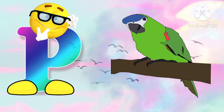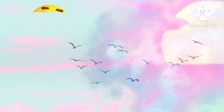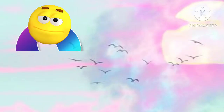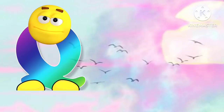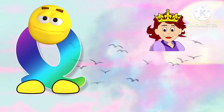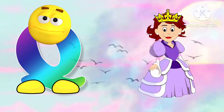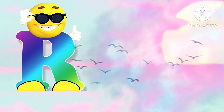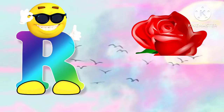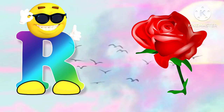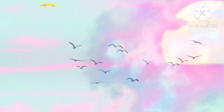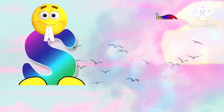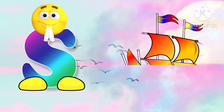Parrot means tota. Q for queen. Queen means rani. R for rose. Rose means gulab. S for sheep.